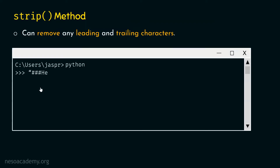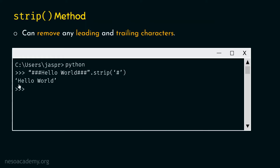For example, let's type a string with hash characters on both sides — '###hello world###' — then dot strip, and within the parentheses provide the hash character. As expected, if we hit enter, we get the string 'hello world'. Strip method removes all leading and trailing hashes because we provided hash as the argument. So strip method not only removes whitespaces, but can remove any leading and trailing characters like hashes.